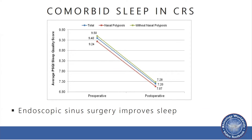The red line represents the nasal polyposis group and the green line those without nasal polyposis. There is a significant improvement in both phenotypes — those with and without polyps — further suggesting that nasal polyps or nasal obstruction is not the primary driver of overall sleep dysfunction, and that something else is going on.